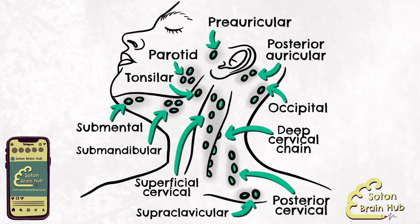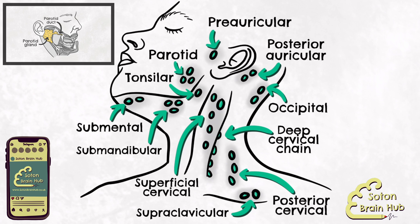Next up are the parotid lymph nodes, a small group located superficially to the parotid gland. These collect lymph from the nose and nasal cavity, the external acoustic meatus, the tympanic cavity and the lateral borders of the orbit.